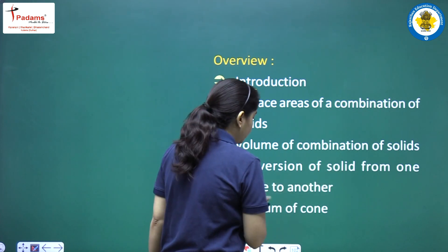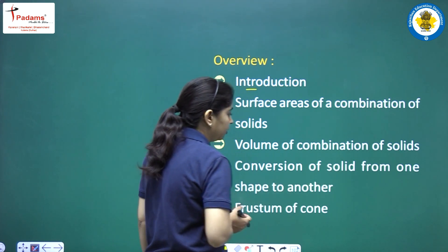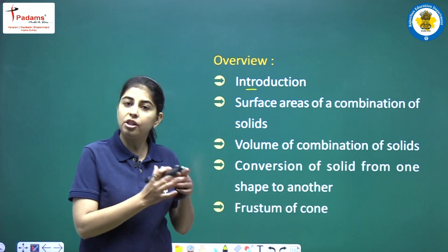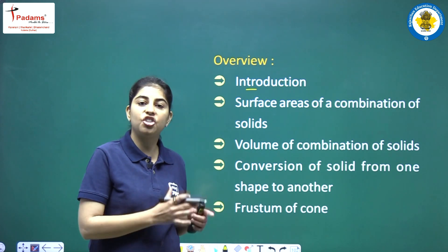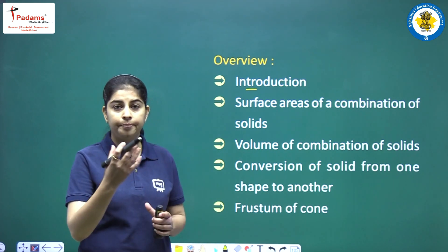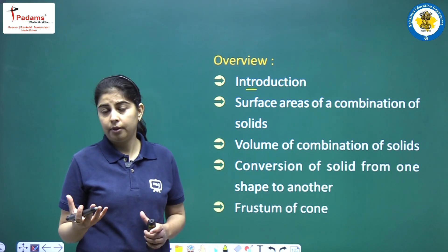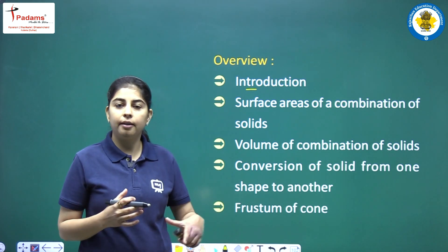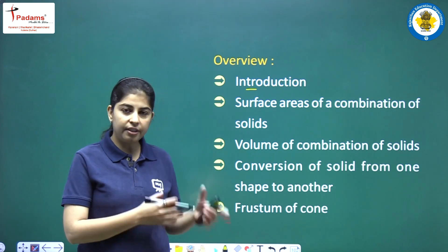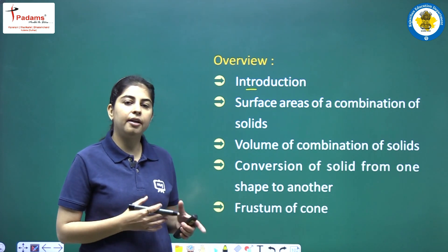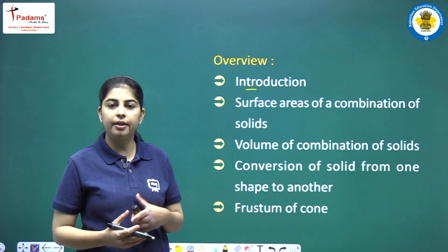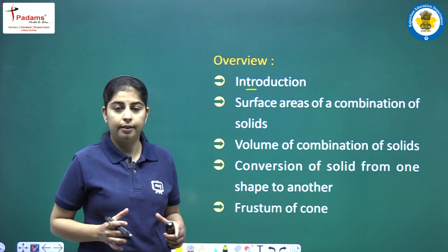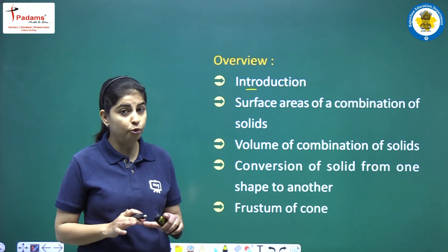Next is conversion of solid from one shape to another. Conversion of solid means we are changing one solid shape to another solid shape. For example, if there is a piece of clay, sometimes we make a cylinder, sometimes we make a cone. We have to find the resulting height or radius, but the volume remains fixed — the volume will never change.